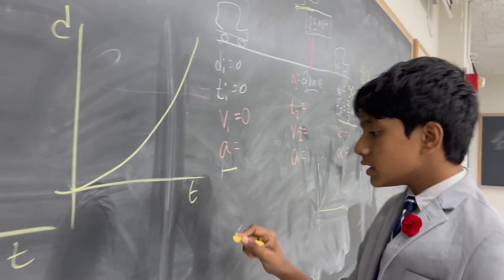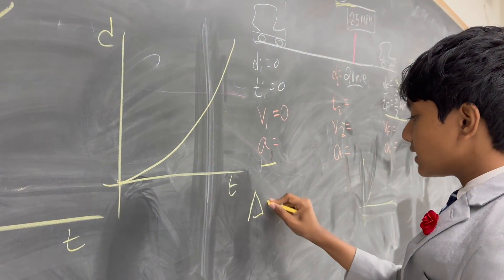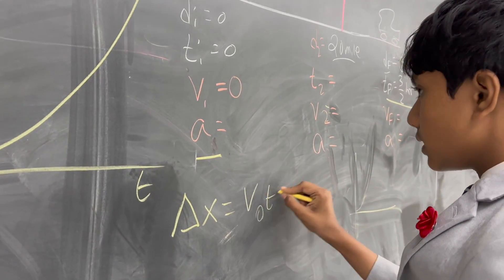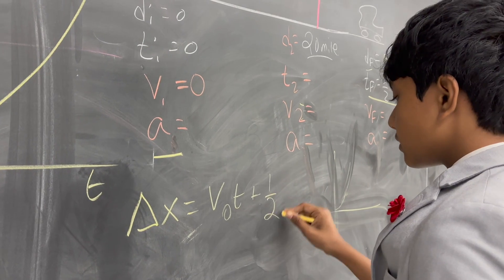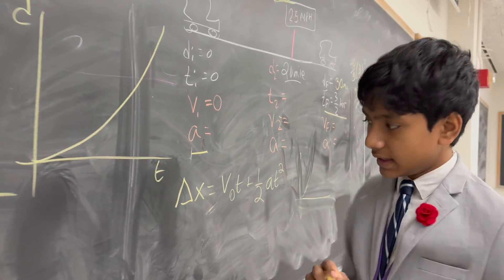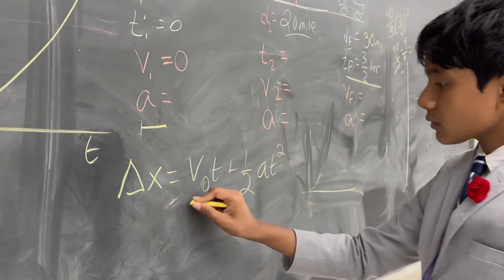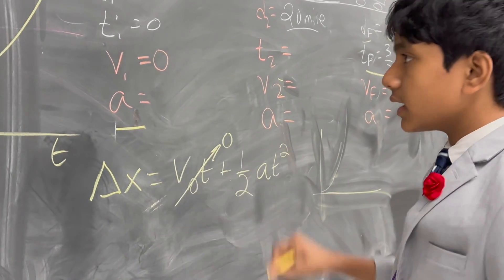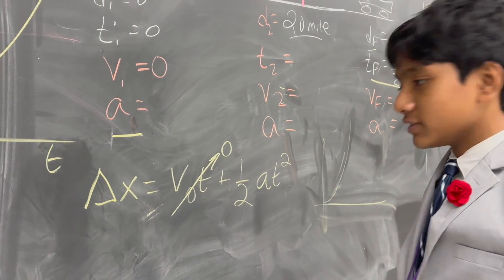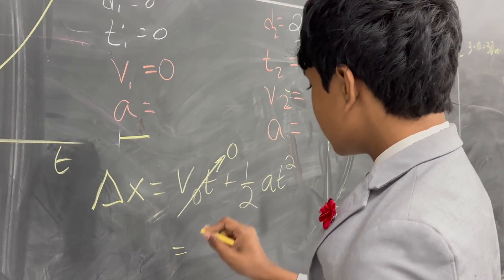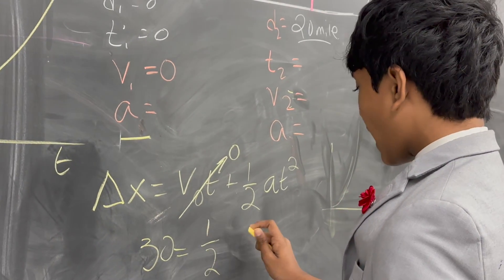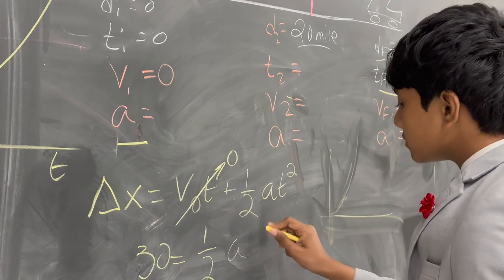So now, we're going to use the equations of kinematics. So, we know that delta X is equal to V_i T plus half A T squared. And here's the handy thing. We know that V_i is 0. Good thing that Mr. Berry gave us that.